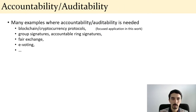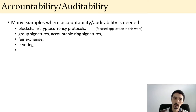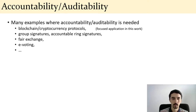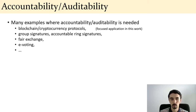There are many examples where this accountability or auditability feature is needed. I already mentioned blockchain and cryptocurrency protocols, which is the application we focus on in this work. There are also existing cryptographic schemes with accountable anonymity features, such as accountable ring signatures and group signatures, as well as higher-level protocols like fair exchange and e-voting where accountability or auditability is desired.